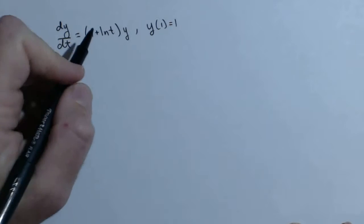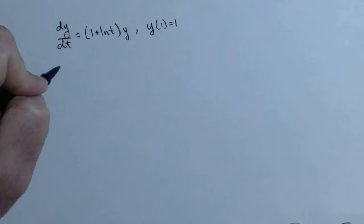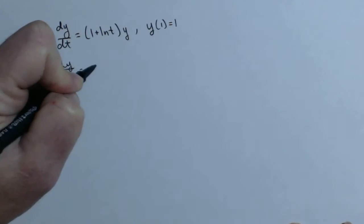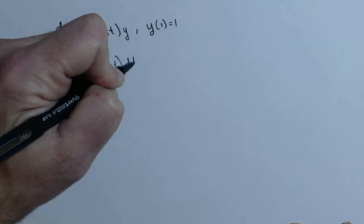So here we're going to start with our separation of variables. So the y needs to go down here, the dt needs to come up here. So we have dy over y equals 1 plus ln of t dt.